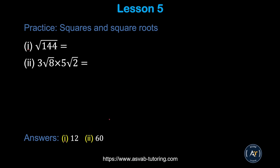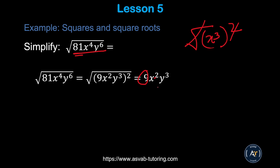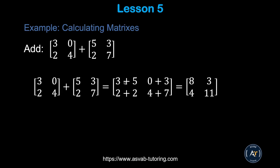Try the practice problems and make sure you get the correct answers. For an expression like the square root of 81x to the fourth y to the sixth: treat each part separately. The square root of 81 is 9. The square root of x to the fourth is x squared. And since x to the sixth is (x cubed) squared, the square root cancels to give y cubed. So the answer is 9x squared y cubed.